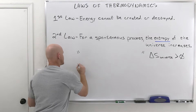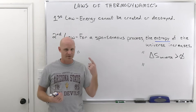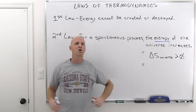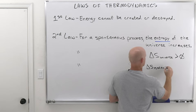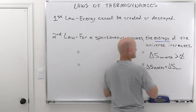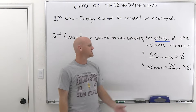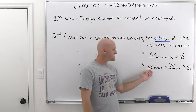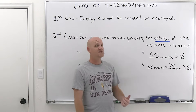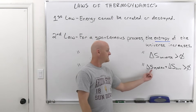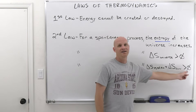The third way to state the second law breaks the universe into its two parts: the system and the surroundings. For a spontaneous process, the delta S of the system plus the delta S of the surroundings must be positive — because together they make up the entire universe. Importantly, the delta S of the system alone does not have to be positive. If the delta S of the system is negative, that's fine — it happens all the time — as long as the delta S of the surroundings is even more positive so the sum is still positive.